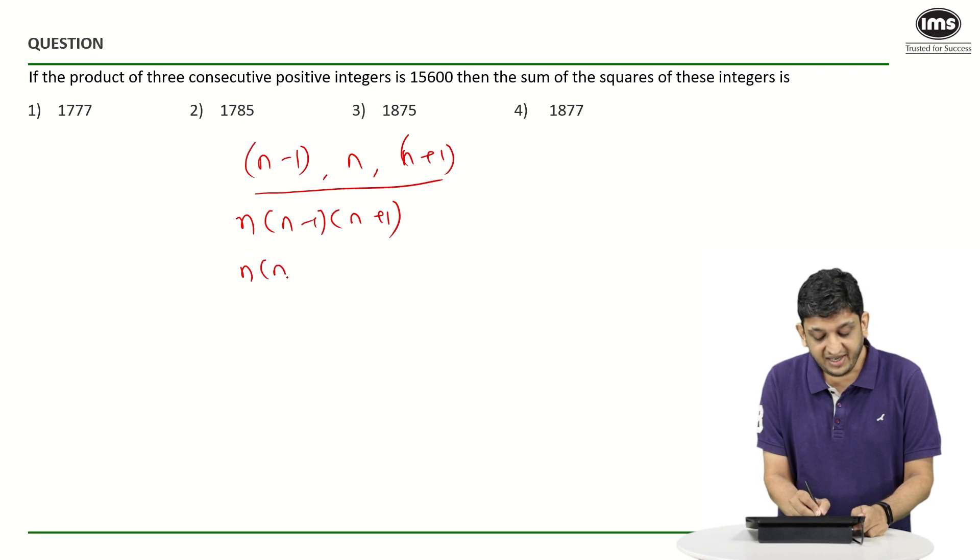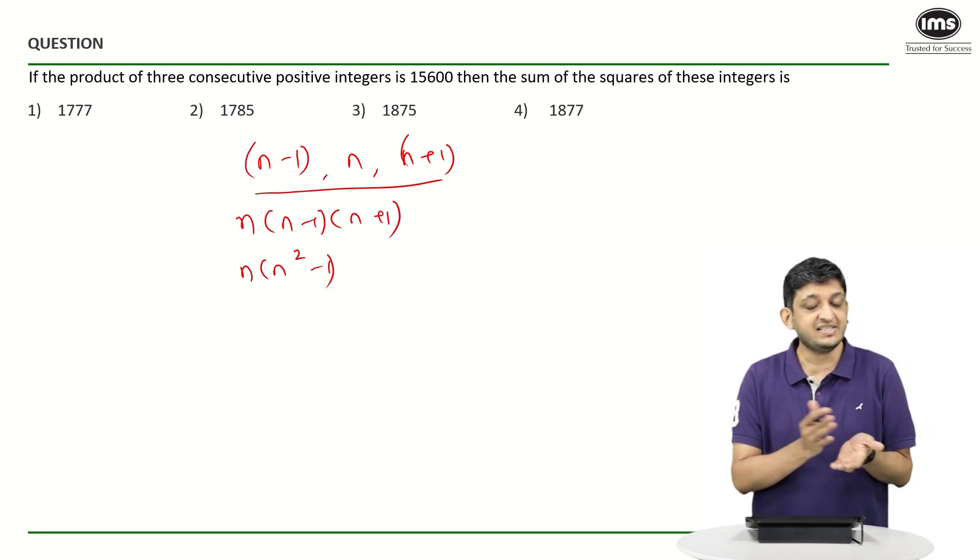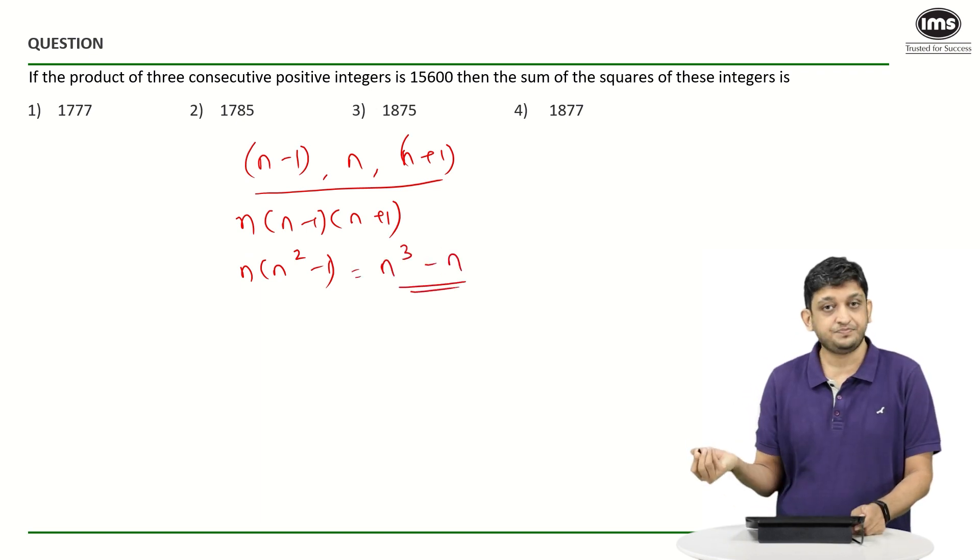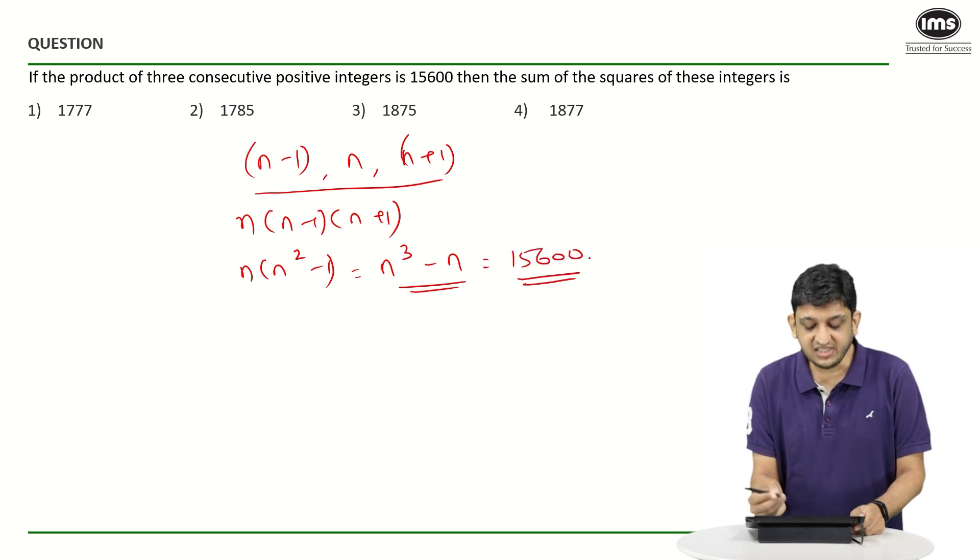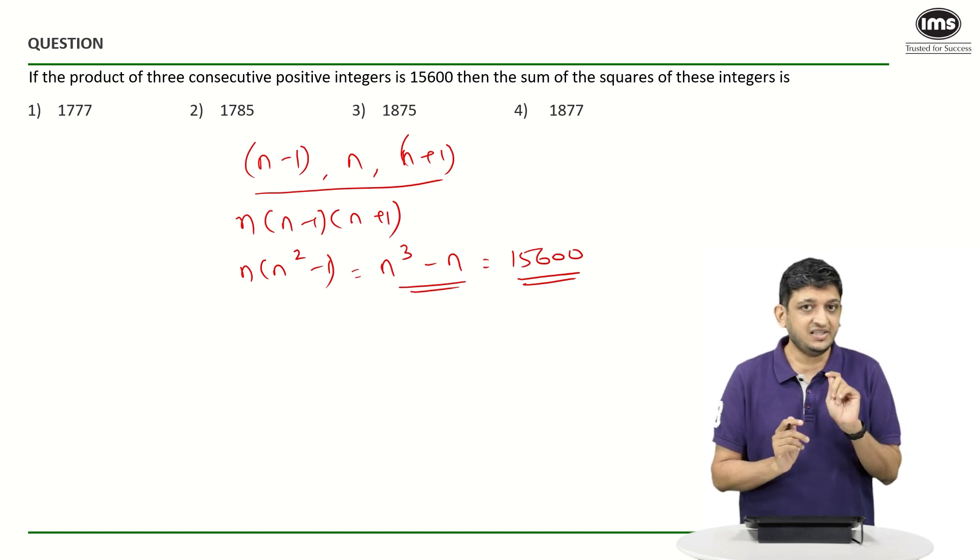If I actually multiply these terms, what am I going to get? n into (n²-1), which in turn is going to give you n³-n. But this n³-n has been told to us to be 15600.